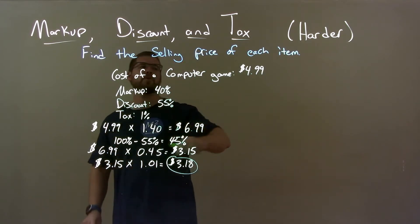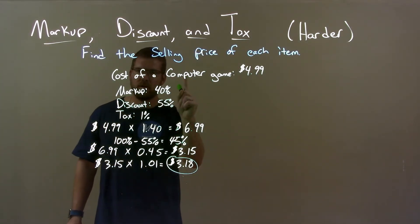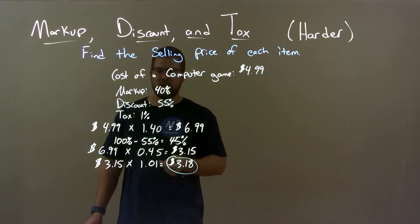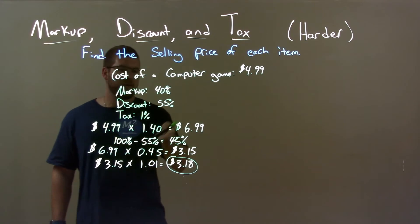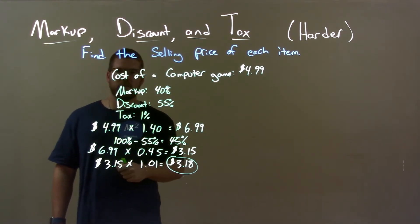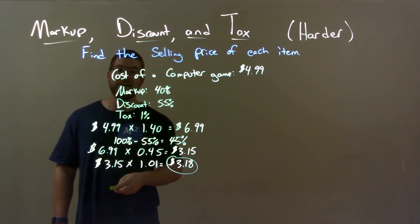Quick recap. We're given the cost of the computer game is $4.99. Markup, 40%. Discount, 55%. Tax, 1%. Take the cost, multiply by the markup, got $6.99. 55% discount means 45% of that price we pay. So, calculating that, we've got $3.15, paying 1% tax gives us our final answer, $3.18.